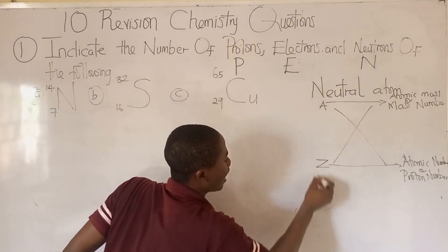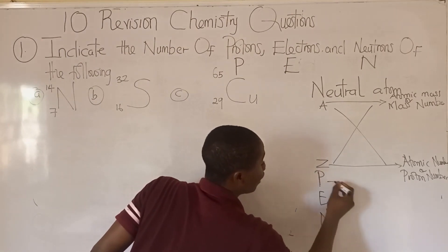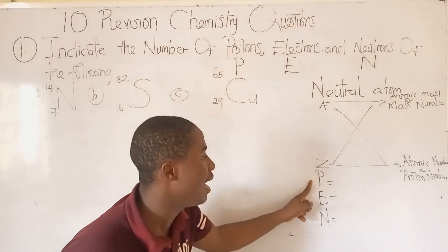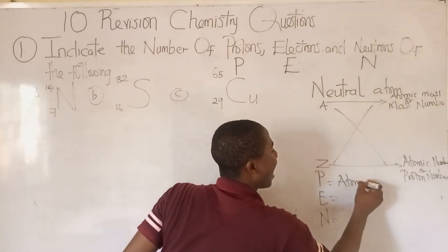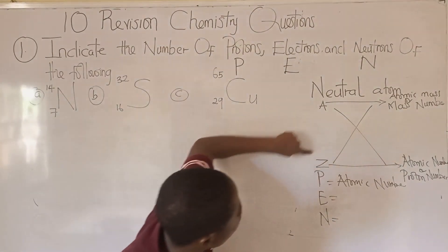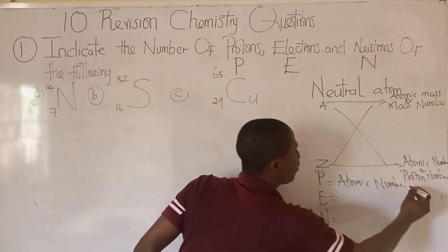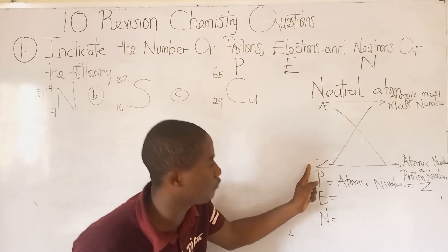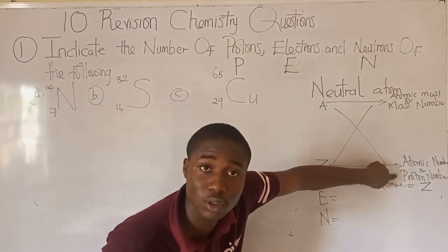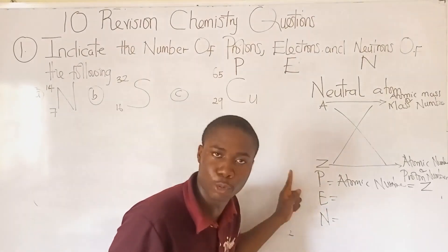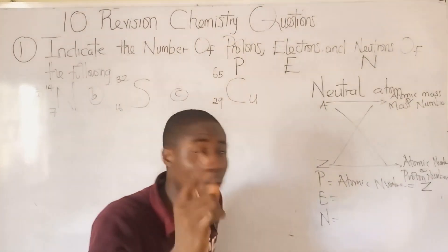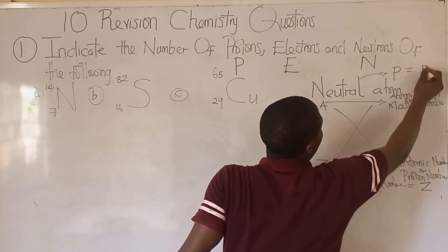This is a neutral atom. It must be noted that the proton number P is also called the atomic number, symbolized as Z. So whatever number we have for our atomic number is our proton number — the value located at the bottom. For a neutral atom, proton number equals electron number; they are the same.